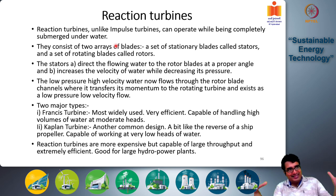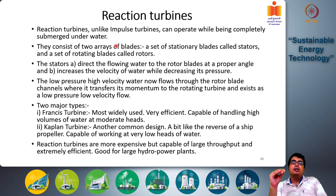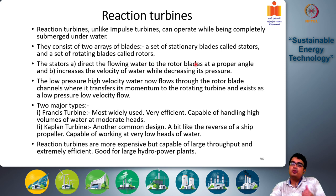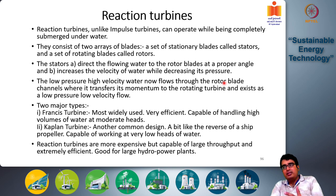The outer blade system is attached to the casing of the turbine and is called a stator because it does not rotate. The function of the stator is directing the flowing water to the rotor blades at a proper angle to maximize the transfer of energy and to increase the velocity of water while decreasing its pressure.